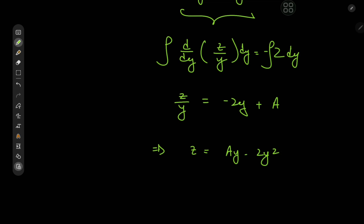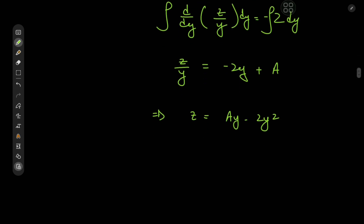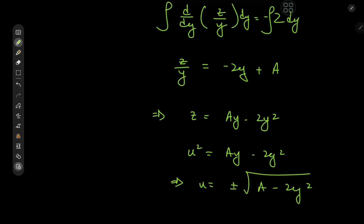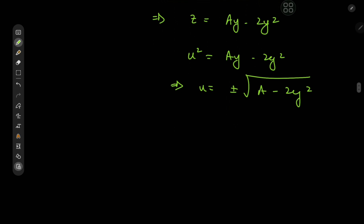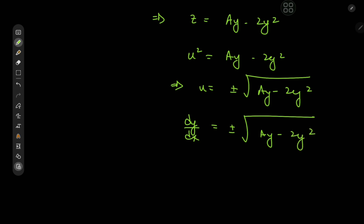Now what exactly was z? Well z was defined to be u², so we have u² equal to ay minus 2y², which implies that u equals plus or minus the square root of ay minus 2y². And u was defined to be the first derivative of y with respect to x, so dy/dx equals plus or minus the square root of ay minus 2y². Now we have a nice separable differential equation to solve.